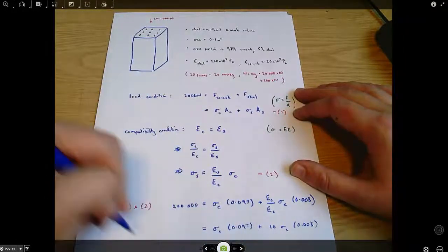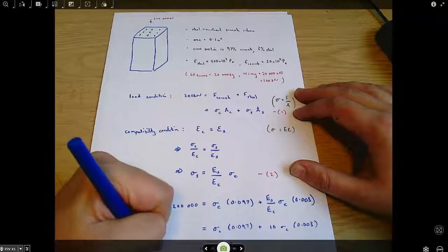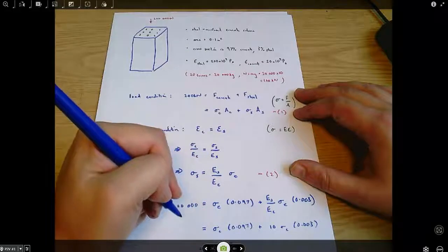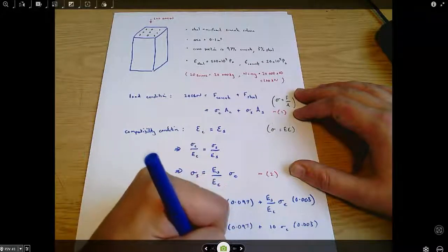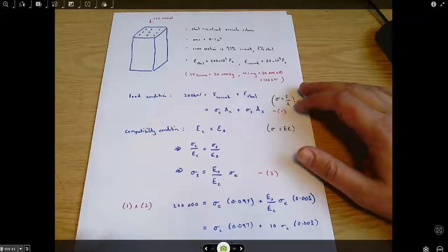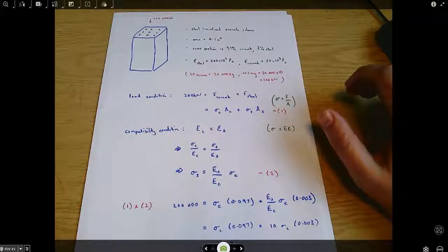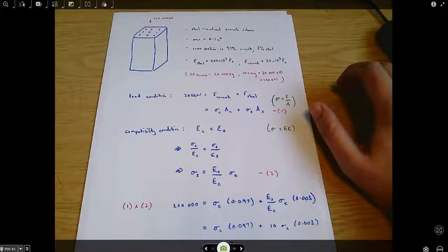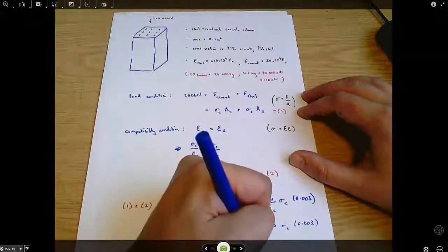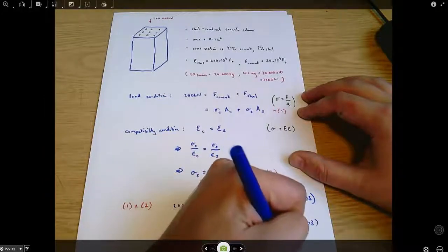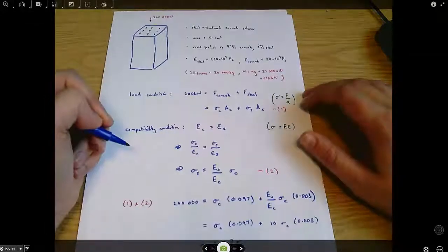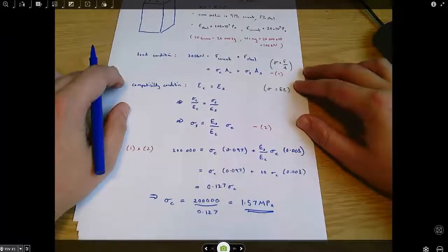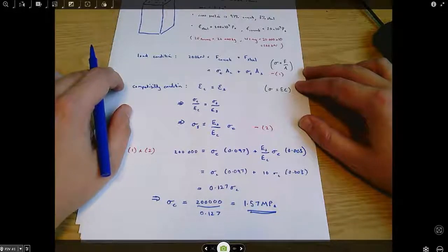And therefore, sigma C, the stress in the concrete, equals 200,000 divided by 0.127, which equals, and that's coming out at about 1.57 times 10 to the 6. I'm going to call it 1.57 megapascals. So yes, 1.57 megapascals for the stress in the concrete.